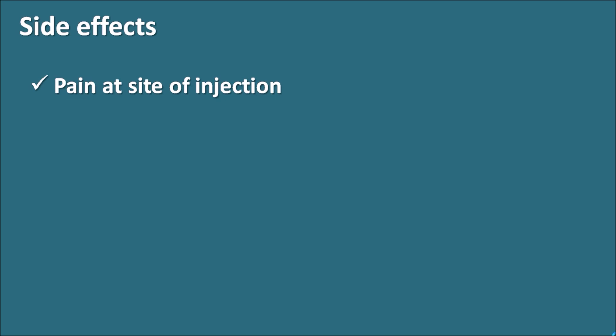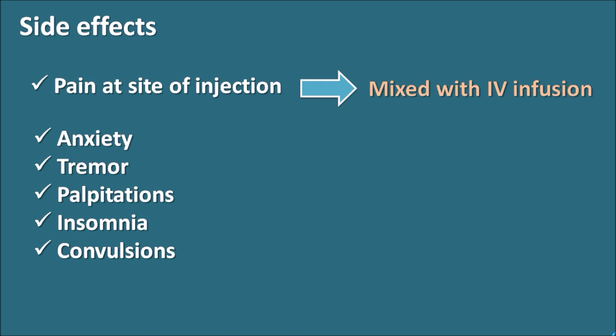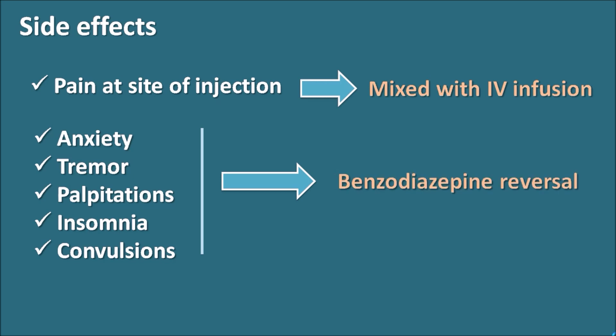What are the side effects of Flumazenil? Flumazenil produces pain at the site of injection. So it is not given directly as an IV injection but is mixed with IV infusions, then it enters into the arteries where it is instantaneously distributed and produces its effect on controlling sedation. Other side effects of Flumazenil include anxiety, tremor, palpitations, insomnia, and convulsions. You can observe that all these symptoms are just the reverse of the actions of benzodiazepines, because Flumazenil acts as an antagonist to the benzodiazepine receptors.